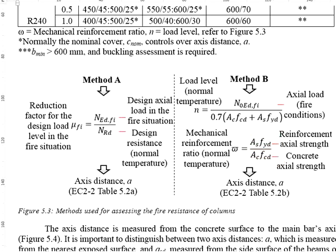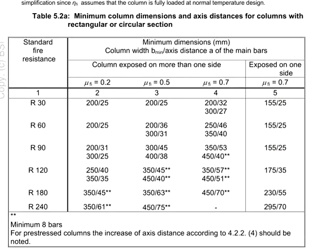So, if you choose to use table 5.2A, then you only need to calculate μfi. Now, if you choose to use table 5.2B, then you need to calculate the load level and also the mechanical reinforcement ratio. Having this understood, now let us look into how do you read the table.